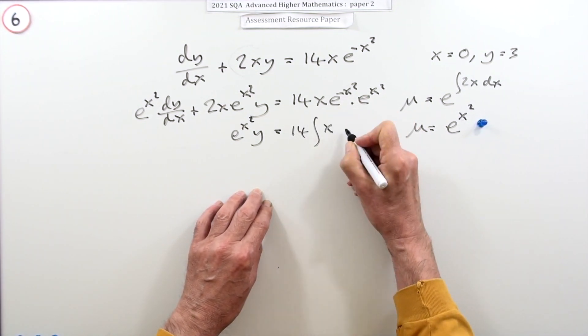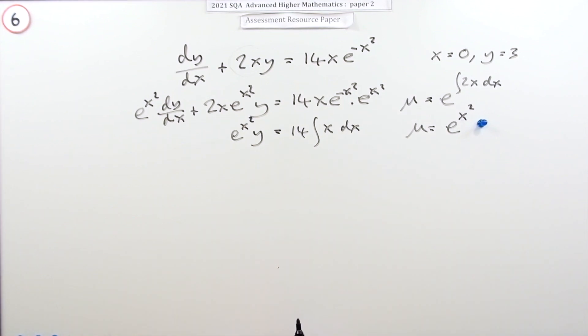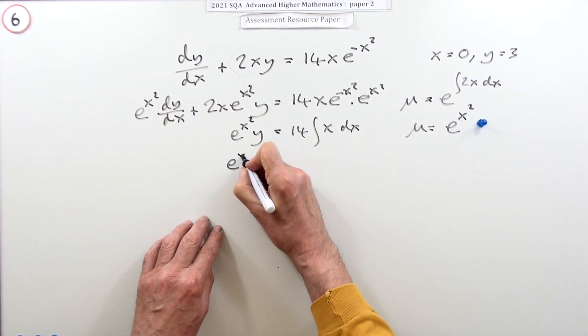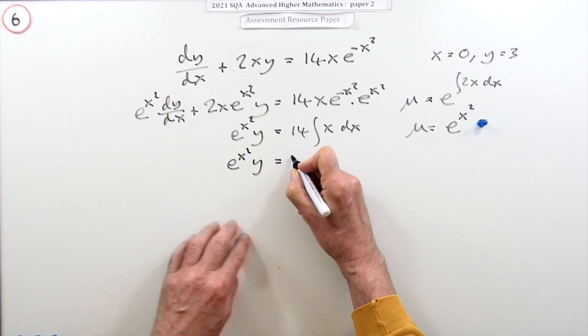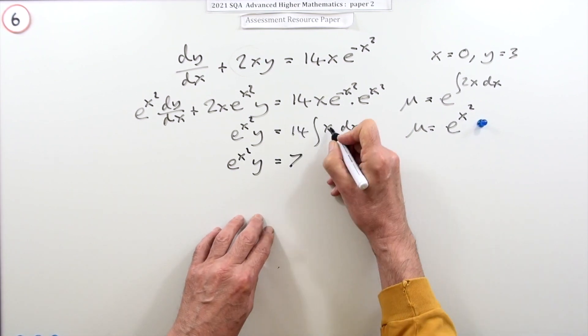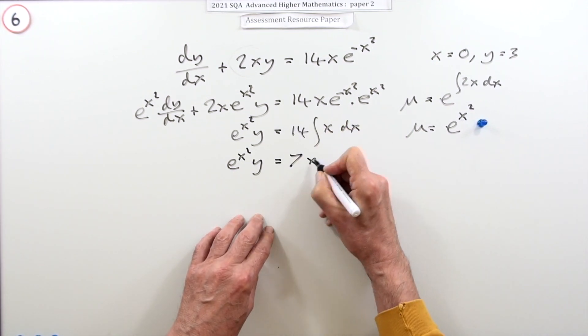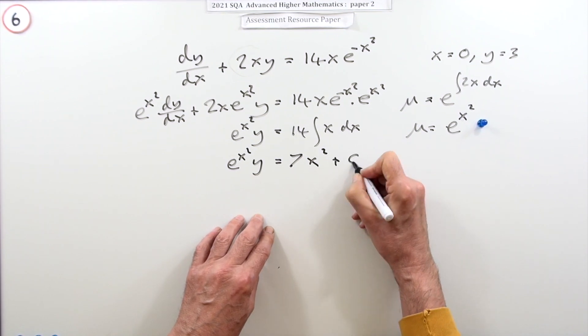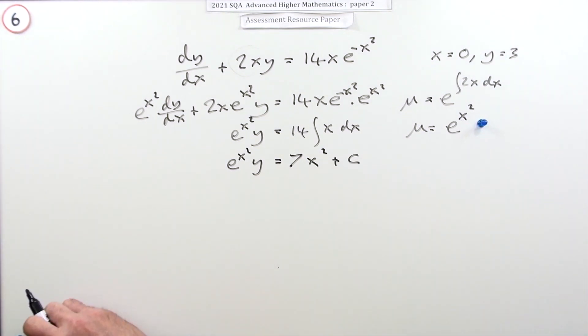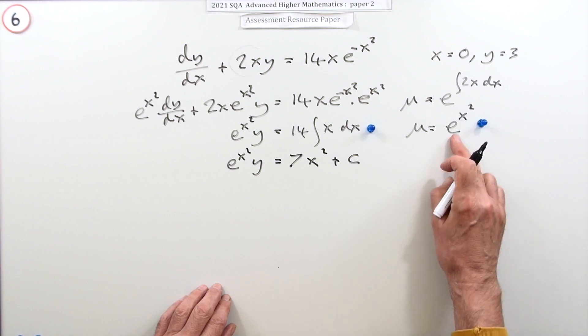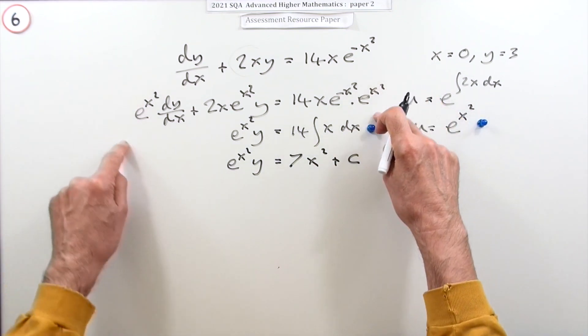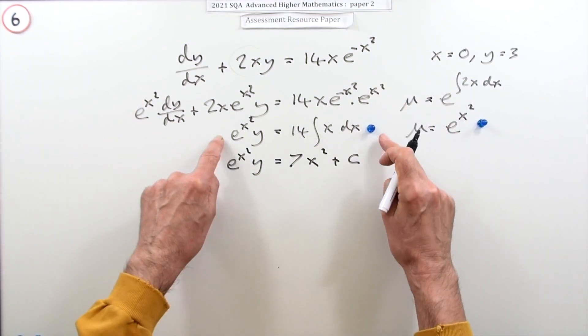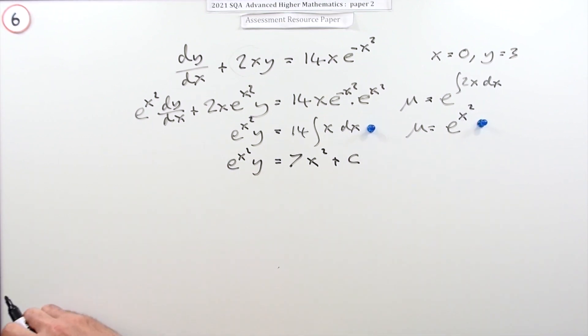Now I've got e to the x squared y equals 7, and that goes up to 2 divided by 2, 7x squared plus c. There was one mark for that line, not necessarily needing to show this intermediate step, then another mark for doing that trivial integral.